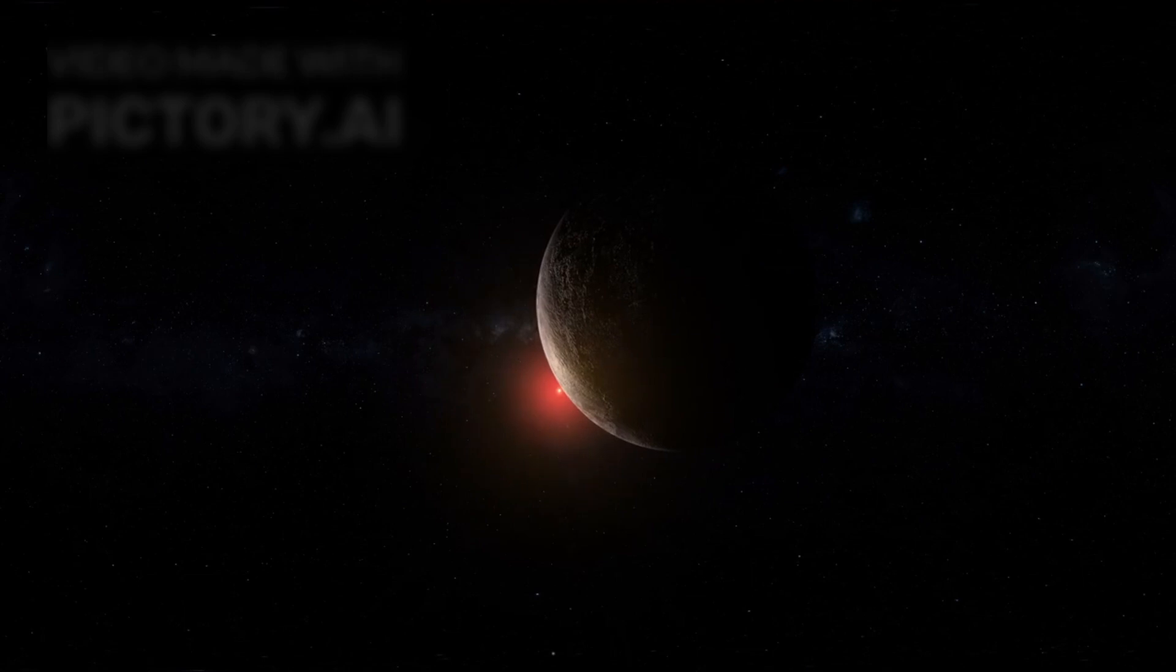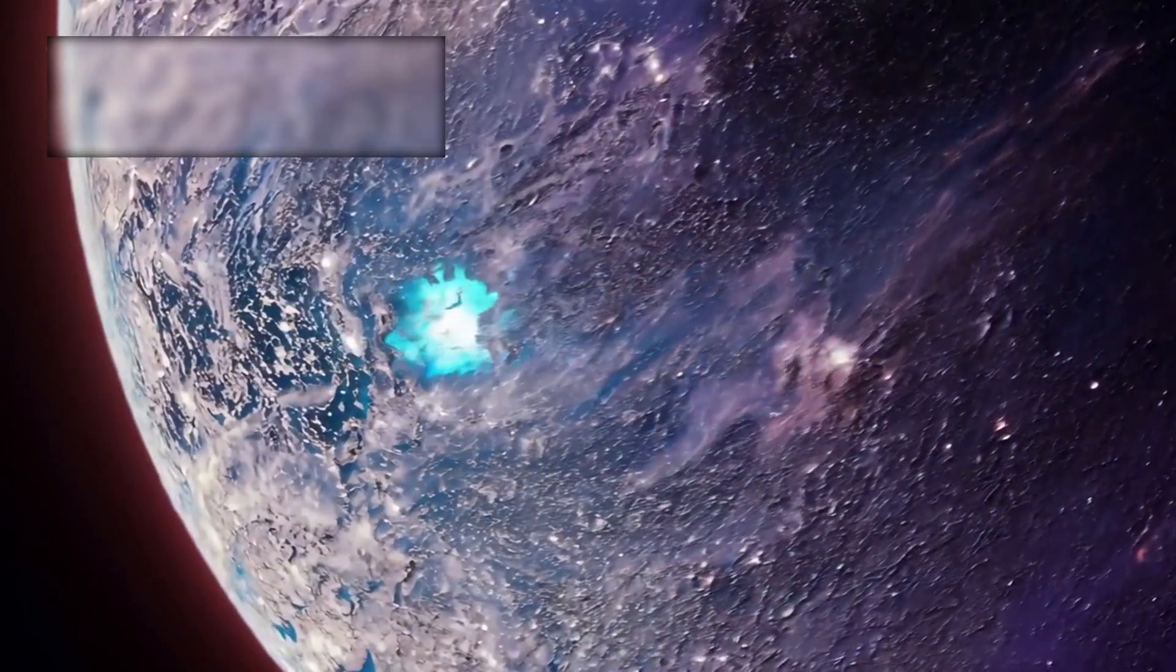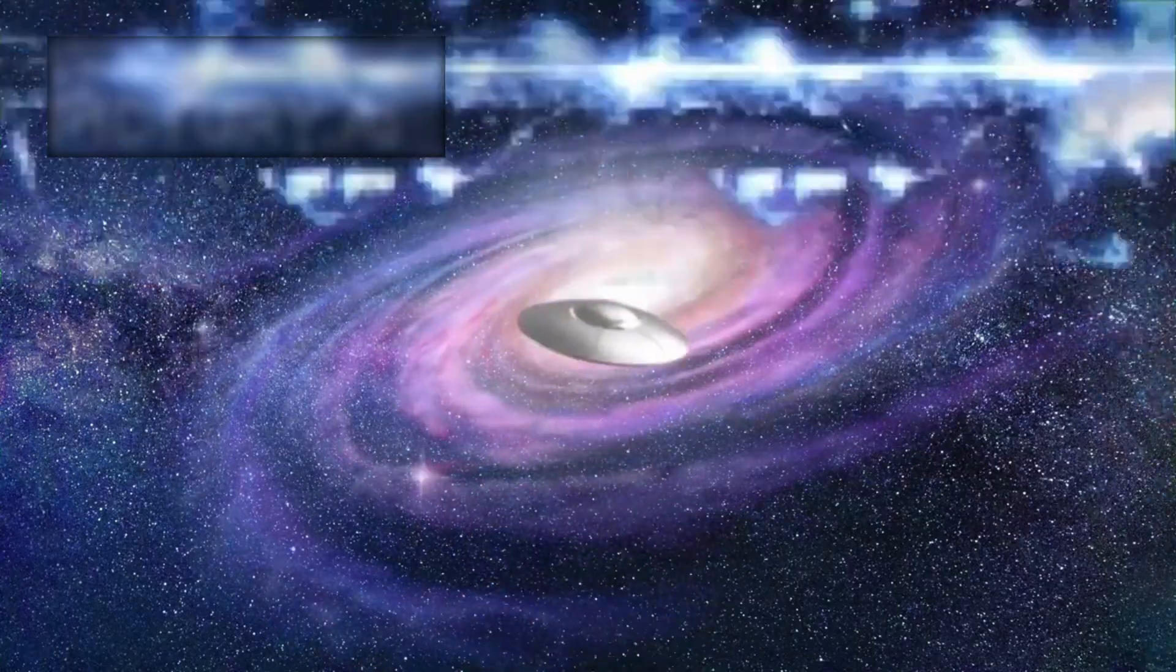The telescope focused its gaze on Proxima Centauri B, the closest exoplanet to our solar system, and detected mysterious bright flashes. Could these be signs of an alien civilization? Stay tuned for more.